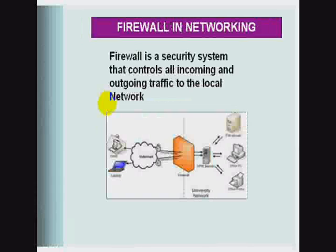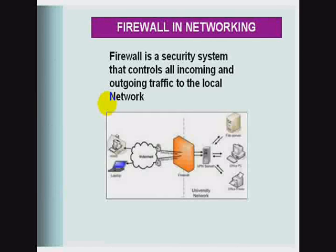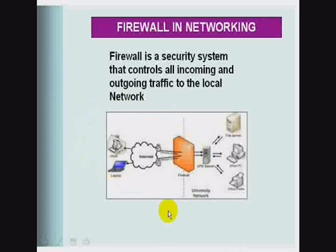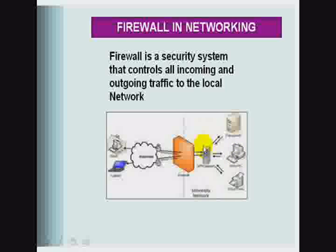Firewall and network. A firewall is a security system that controls all incoming and outgoing traffic to the local network. As you can see here, we have a representation of how a firewall is configured in the network. On the right side is a local network — servers, personal computers, printers, and other resources. On the left side is the internet, including laptops, personal PCs, iPhones, and other resources.